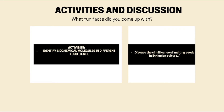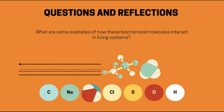Now it's your turn to try these activities. Look at food packaging or local dishes — can you identify which biochemical molecules are present? What biochemical changes occur during germination? Think about how biochemical molecules work together in your body: carbohydrates provide energy, proteins build your muscles, lipids store energy, and DNA controls everything from your eye color to how your cells function. It's a beautiful symphony happening every second inside you.